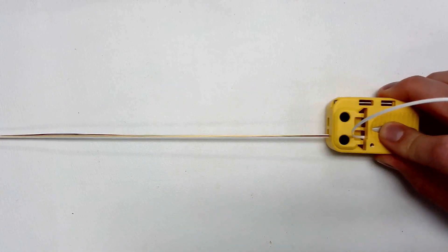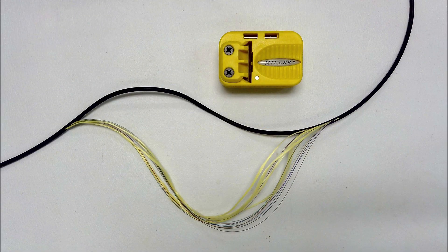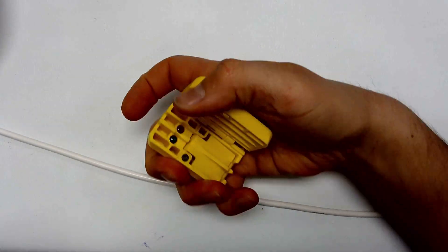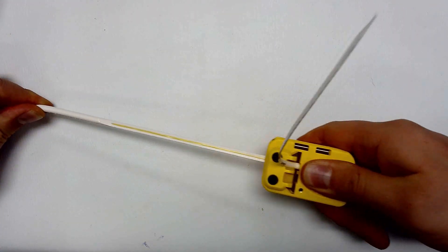The shallow channel works well on loose buffer tube and thin jacketed MDU drop cables. The deep channel is optimized to cut deeper on thicker jacketed drop cables and some micro duct.